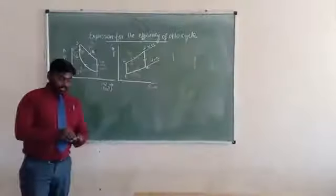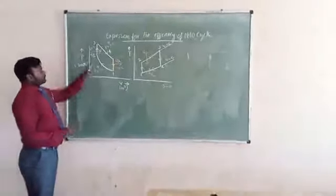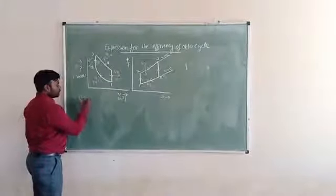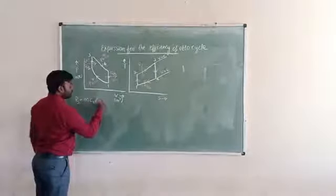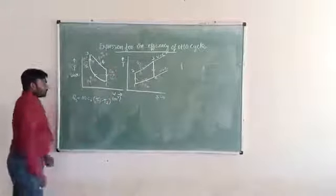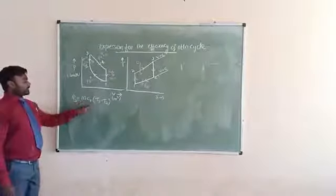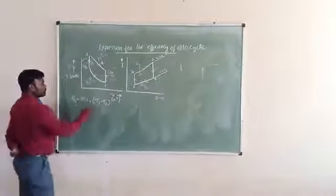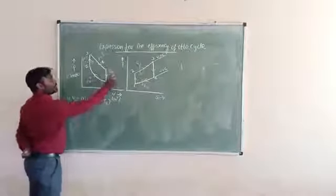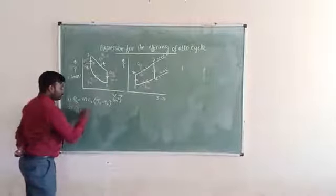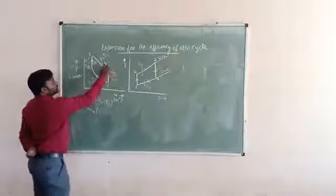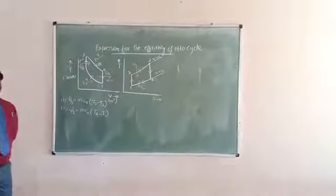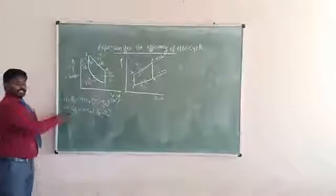Now we are going to analyze the processes. First, let us take process 2-to-3. Heat supplied Qs is equal to mCv(T3 - T2), where m is mass and Cv is specific heat at constant volume, and T3 and T2 are temperatures at states 3 and 2. The next equation is heat rejection, which is equal to mCv(T4 - T1).